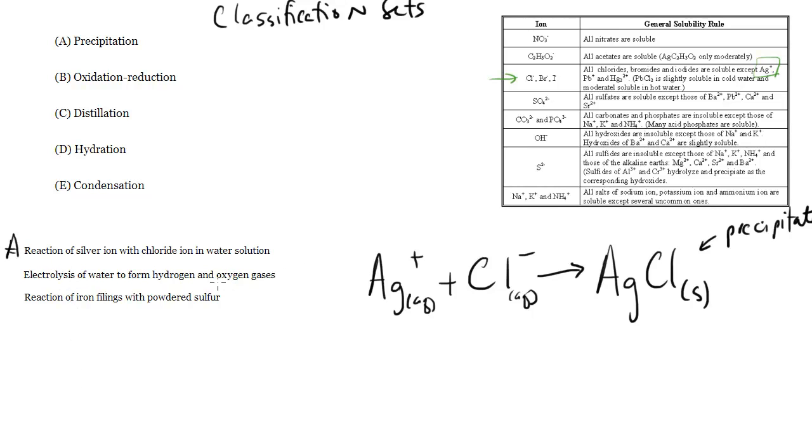Electrolysis of water to form hydrogen and oxygen gases. So this is basically the splitting of water using electricity. The equation looks something like this: we have two waters and we form two hydrogen gases and an oxygen gas.